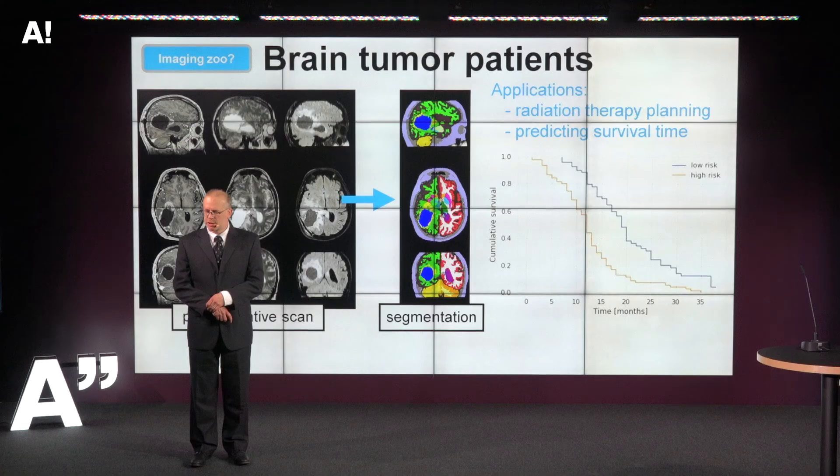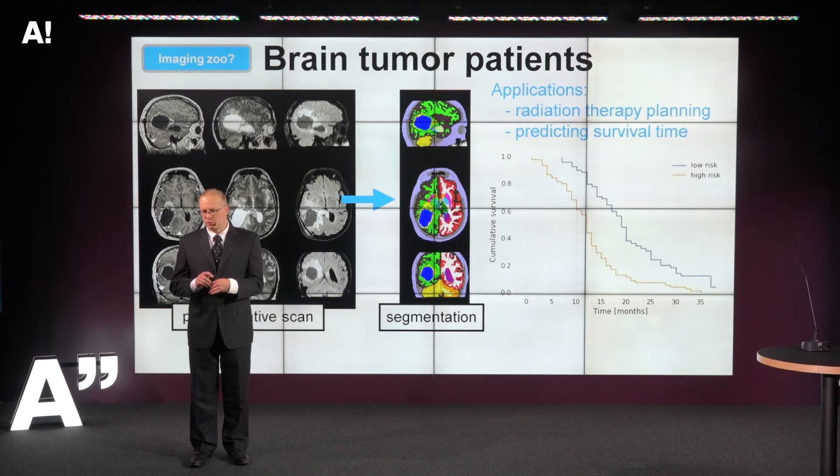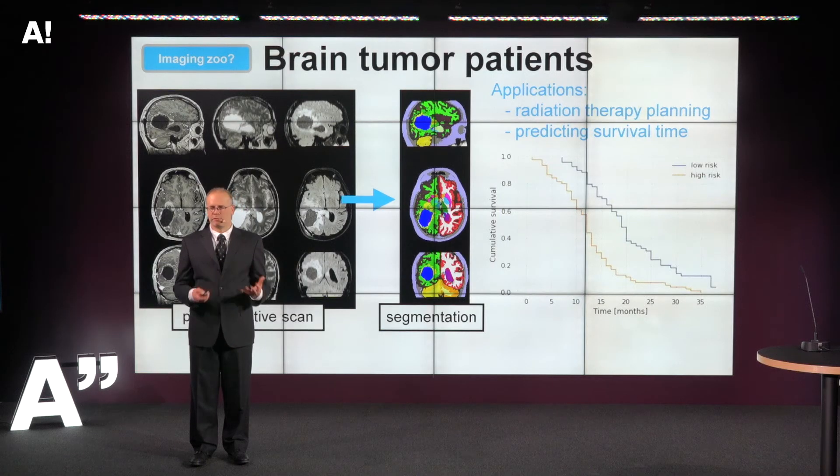There are two main applications I want to mention. One is radiation therapy planning — you want to radiate the tumor but also avoid hitting eyeballs. The other is predicting how long individual patients are going to survive, shown in the graph: the horizontal axis is time, the vertical axis is the fraction of patients still alive. After three years, almost nobody has survived. Based on these segmentations and analyzing the shape of different structures, you can pull the patient group apart into people who will live relatively long and those who are short survivors — obviously very useful clinical information.